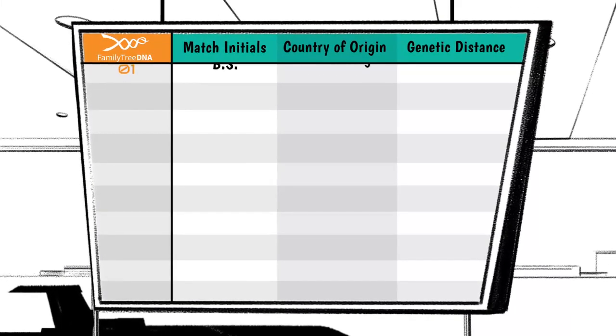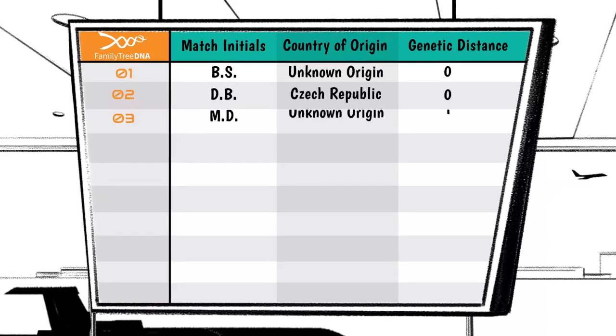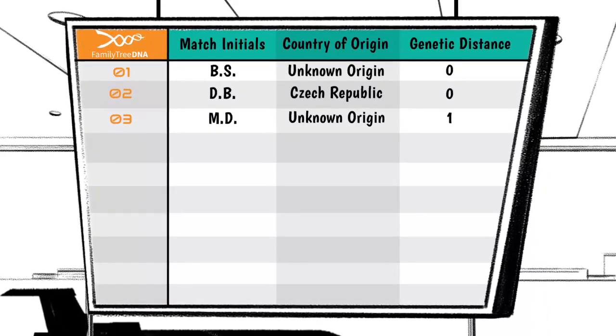We have identified your three closest matches: two individuals zero steps apart from you, one individual one step apart from you.